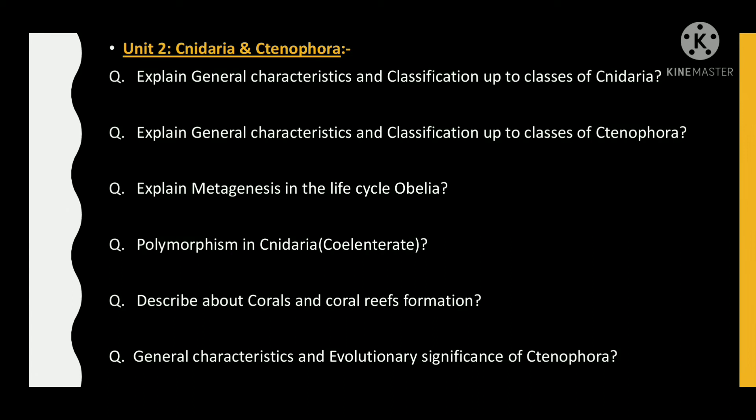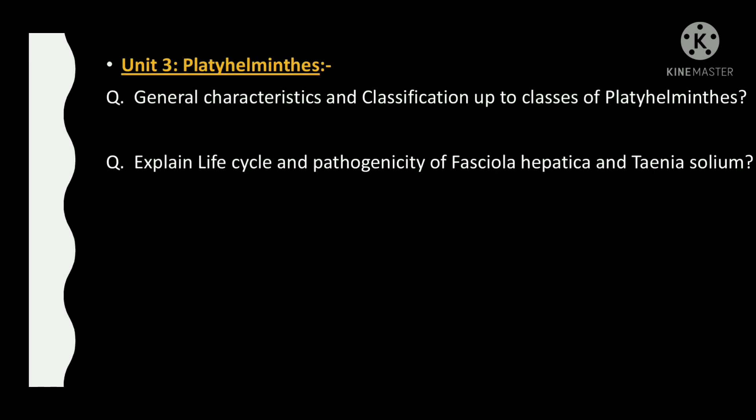Then the next question is: describe corals and coral reef formation. Then: general characteristics and evolutionary significance of Ctenophora. Unit 3: Platyhelminthes. Questions from this chapter are: general characteristics and classification up to classes of Platyhelminthes, and explain the life cycle and pathogenicity of Fasciola hepatica and Taenia solium.